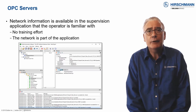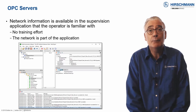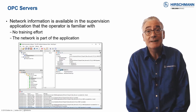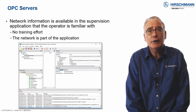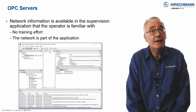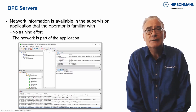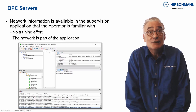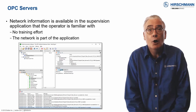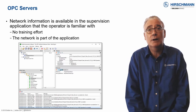Any value which is visible in Industrial HiVision is also available as an OPC tag. This includes standard SNMP variables, as well as information such as the status of the complete network, or zones within a network.